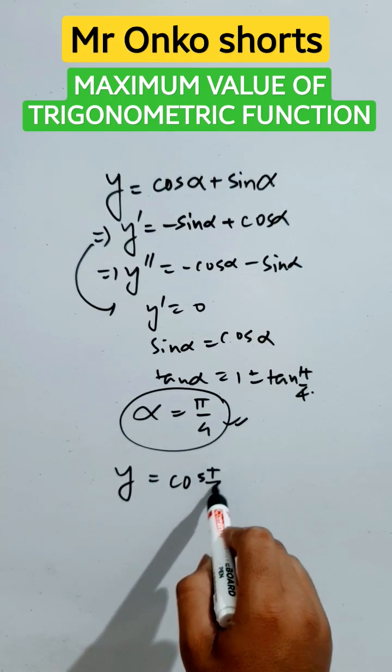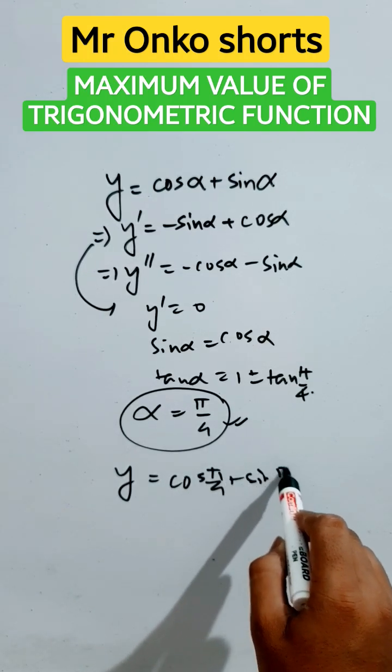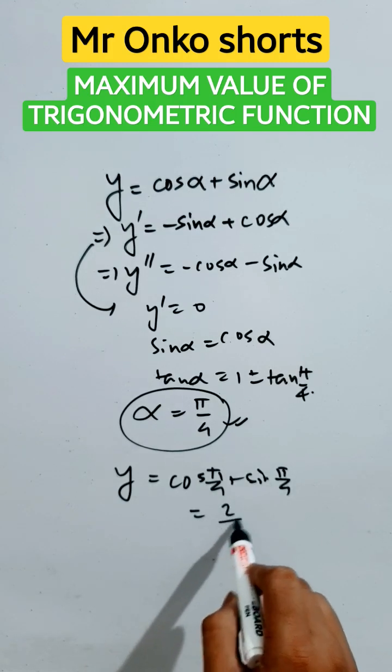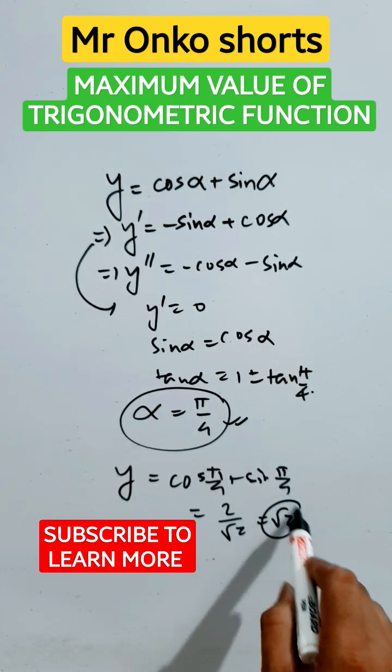That is 2 by root 2 equals root 2 is the maximum value of the given function.